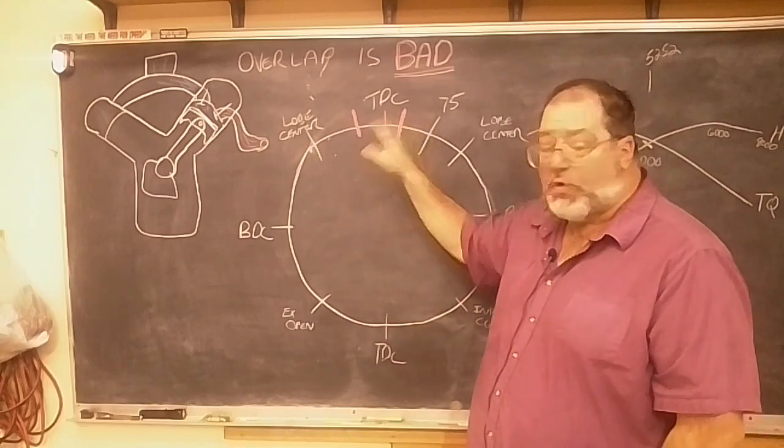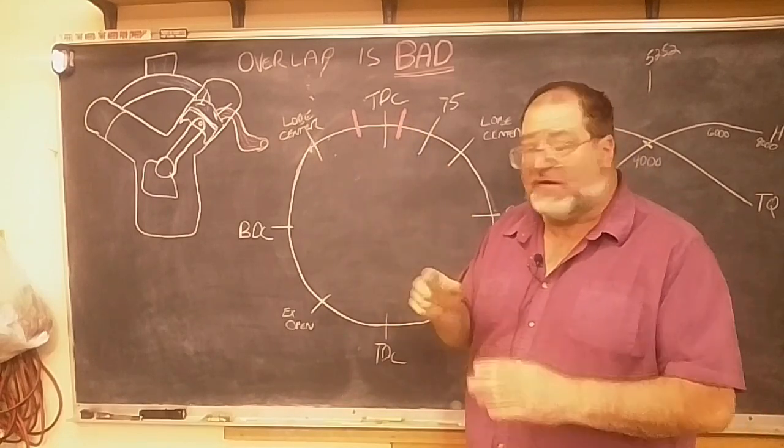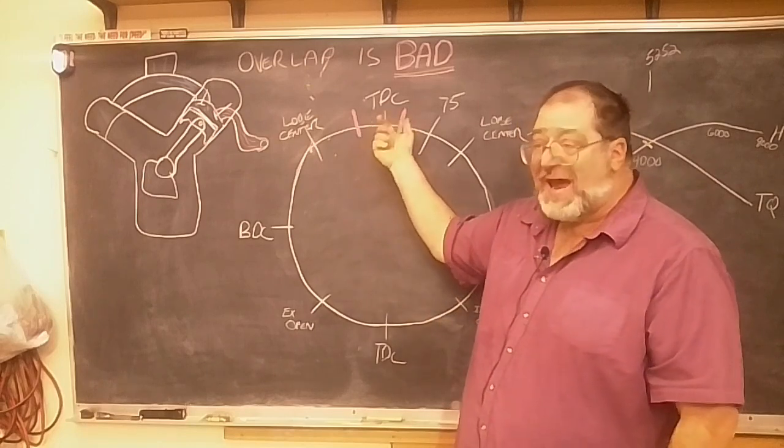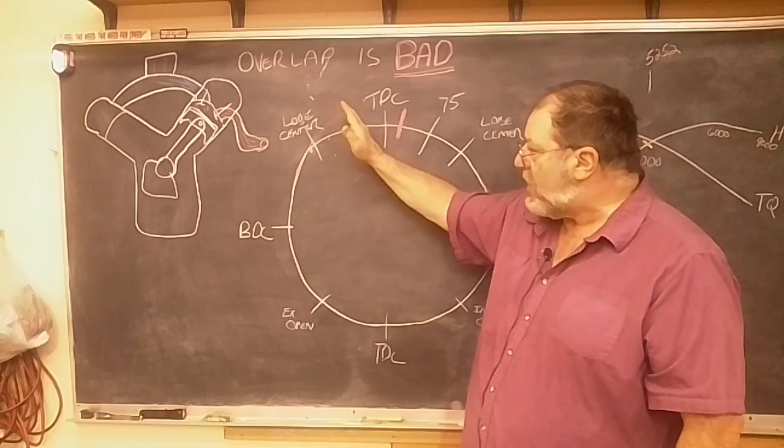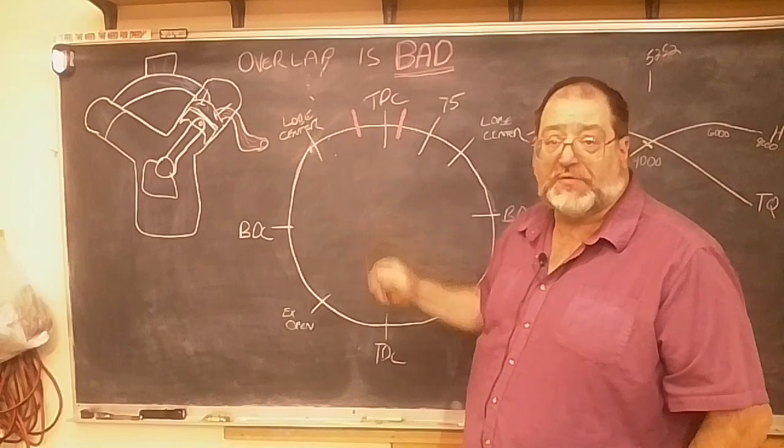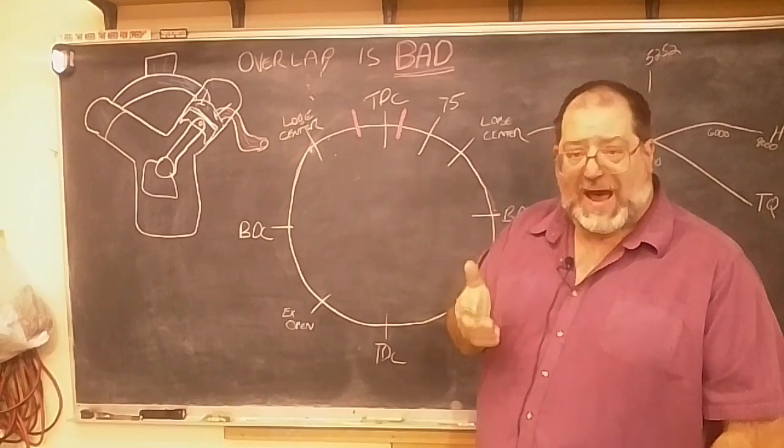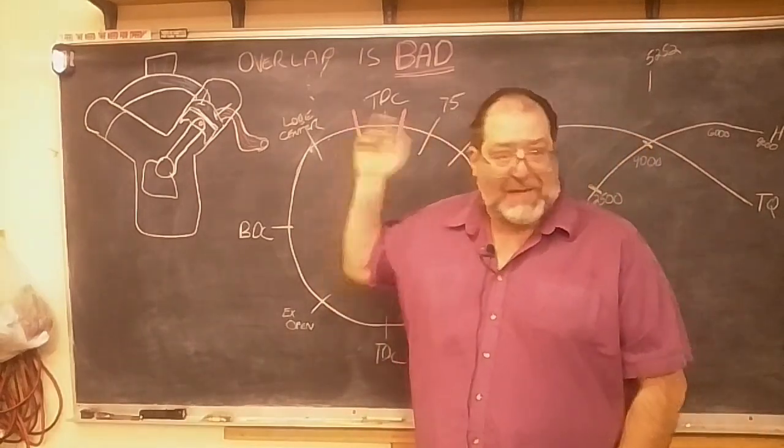Overlap is the time period during which the intake valve and the exhaust valve are open at the same time. Most OE cams don't have overlap. In fact, they have negative overlap, which means there's a gap between when the exhaust ends and when the intake starts. And they do that because overlap is bad.